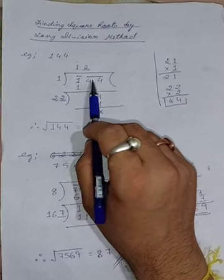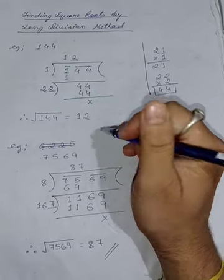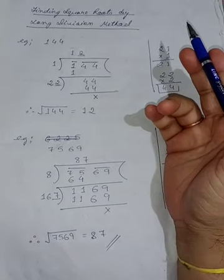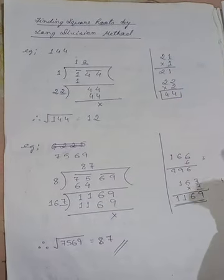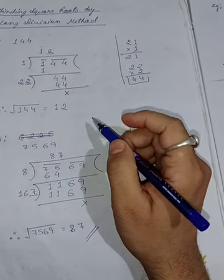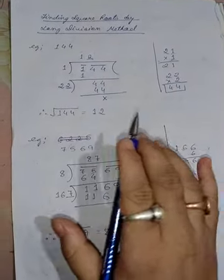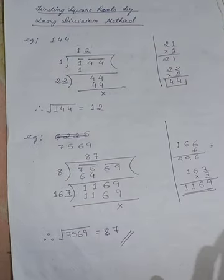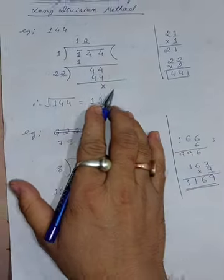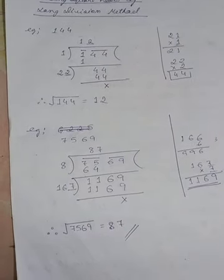We have already learned how to find square roots using prime factorization. However, sometimes the number might be quite big, or the number could be a square of a prime like 29. In those cases, prime factorization becomes very hectic because you have to try 2, 3, 5, 7 and then jump all the way to 29. So there is another method where you don't need to worry about which prime number to use.